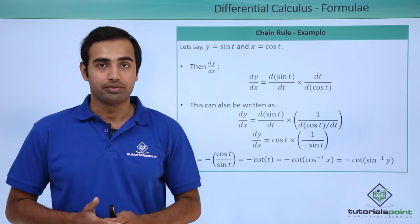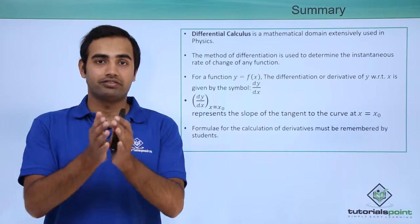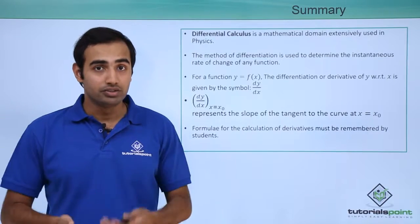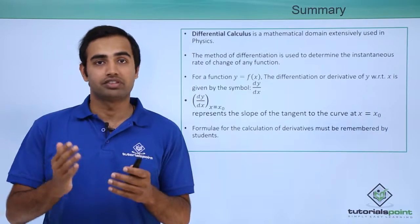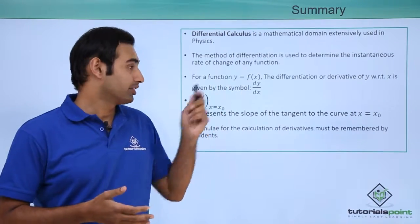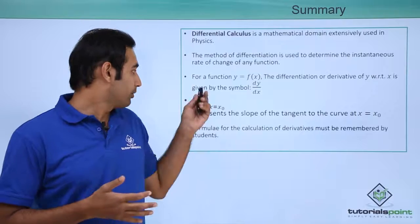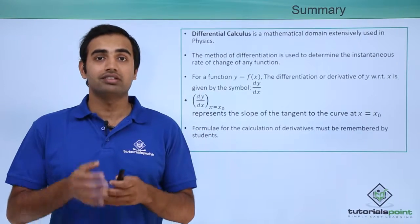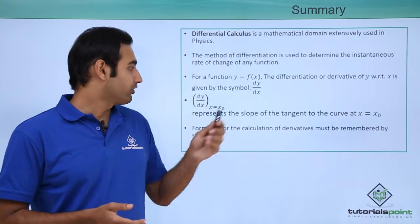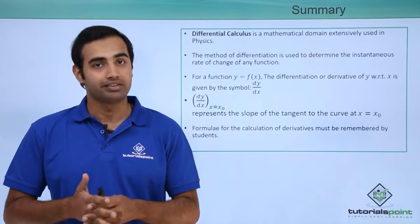To summarize: differentiation is a vast branch of mathematics extensively used in physics. The method of differentiation is used to find the rate of change of one quantity with respect to another. For a function y = f(x), its derivative is defined as dy/dx. The symbol dy/dx at x = x0 represents the slope of the tangent at that point on the curve. All the derivative formulae must be properly remembered by students, as they will be repeatedly used in physics. Thank you.